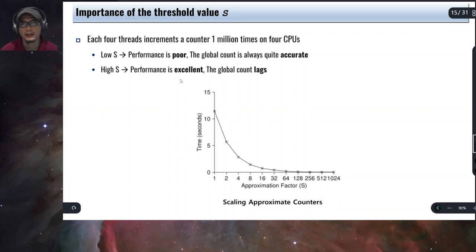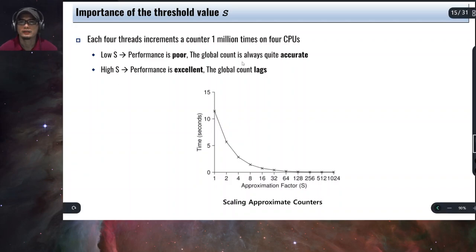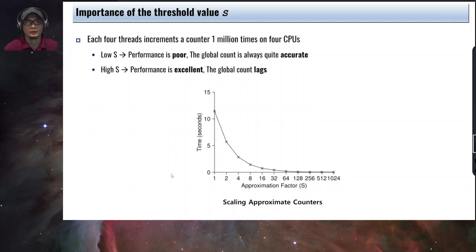So that's the tradeoff with the approximate counter — it is not precise and there is a slight drift from the actual value, but it is more scalable. This is shown in a graph comparison between the traditional counter and the approximate counter. Since each thread has its own local counter, we achieve consistent performance per core even as the number of threads increases. The graph shows that as you increase the approximation factor S, the time in cycles decreases, but the accuracy of the global counter is also affected.